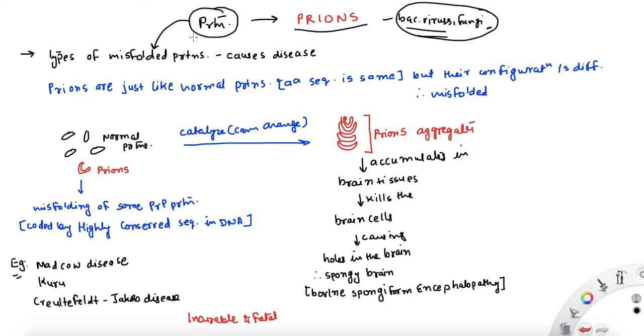But there is quite a bit that recently, in this new era, we know. This misfolding, these proteins as I said, are just normal proteins. They are just like normal proteins. The only difference is the amino acid sequence is the same as the normal protein, but they have a different shape, a misconfiguration, misfolding.